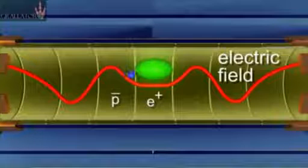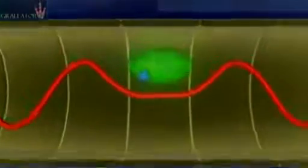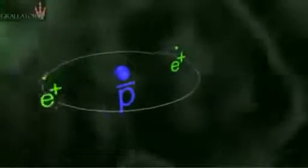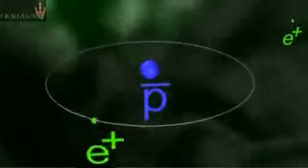We now bring the positrons and antiprotons into contact. A positron is bound to an antiproton through a collision with a second positron. This forms antihydrogen.